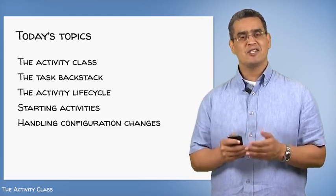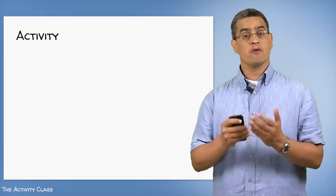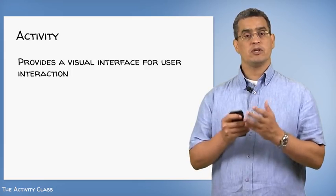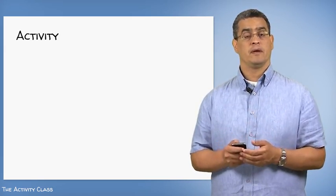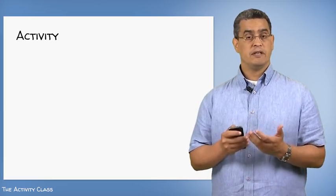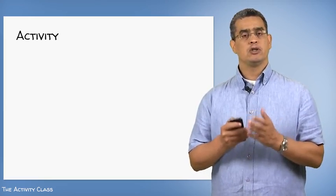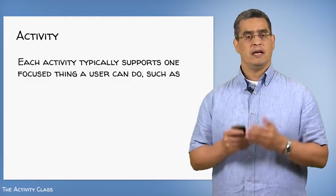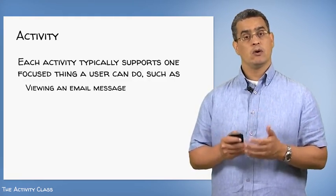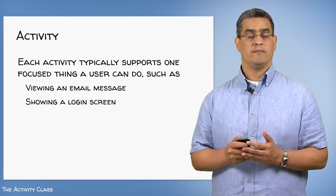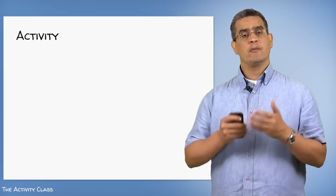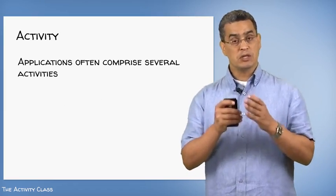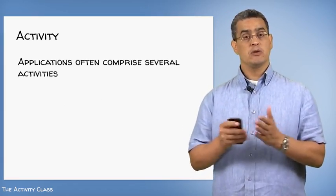Activities are the primary class for interacting with users. They're designed to provide a visual interface through which the user can interact with the application. By convention, activities should be modular — each activity should support a single, focused thing that the user can do with your application, like viewing an email message or showing a login screen. If you follow this convention, you end up creating applications by stringing together multiple activities, each with a single purpose that the user then navigates through.